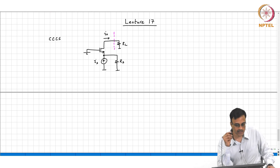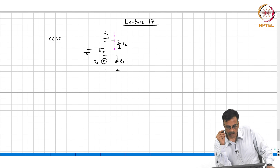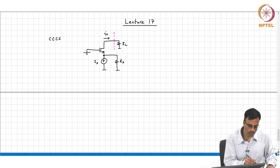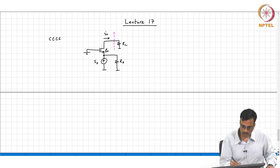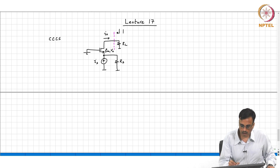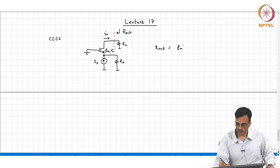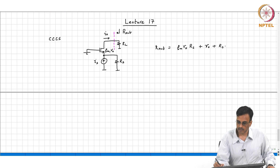Good morning. Welcome to Analog Electronic Circuits, lecture 17. In the last class, we were looking at the current-controlled current source and we found that when the transistors have a finite output resistance R naught, the output resistance looking in, R_out, is basically gm times Ro times Rs plus Ro plus Rs.